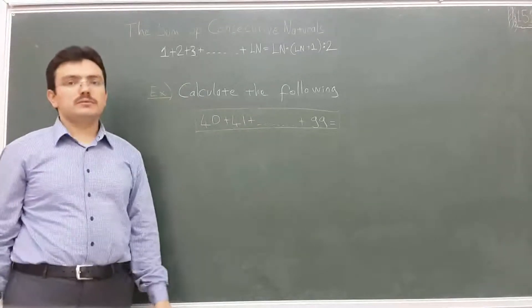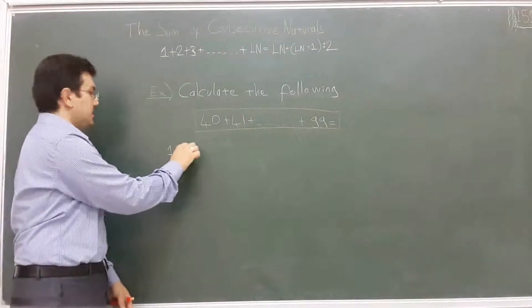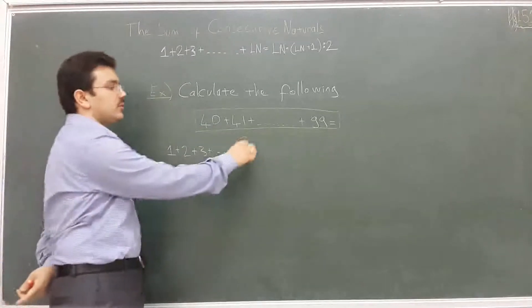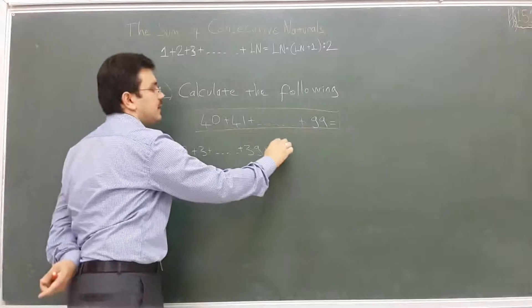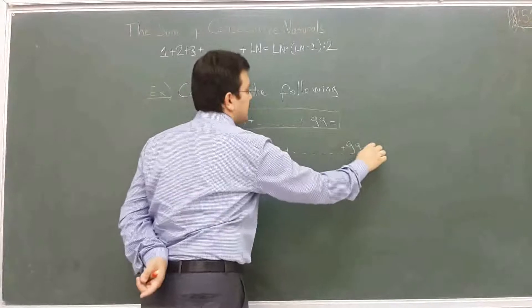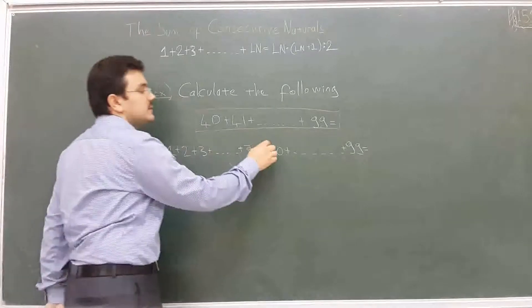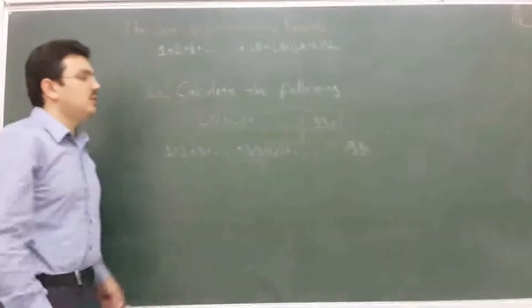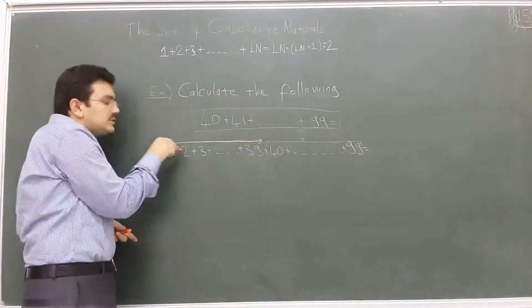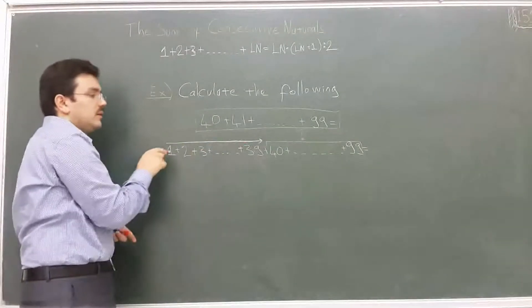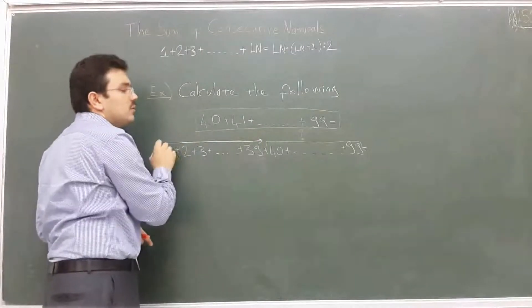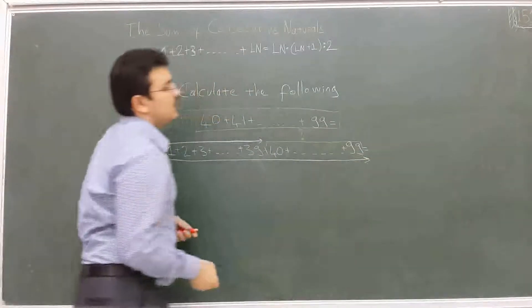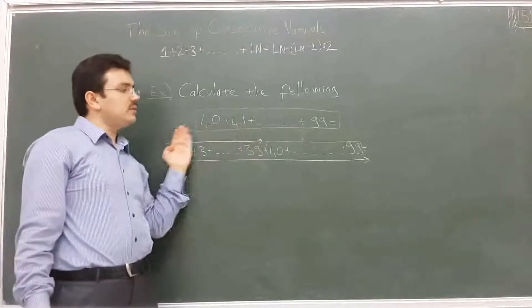If the numbers don't start from 1, we rewrite the sequence as starting from 1: one plus two plus three... and we include the numbers before 40, so we go 1 plus 2 plus ... plus 39 plus 40 plus ... plus 99. The part we want is from 40 to 99. We first calculate the sum from 1 to 39, then the sum from 1 to 99, and subtract the smaller from the bigger to find the answer.